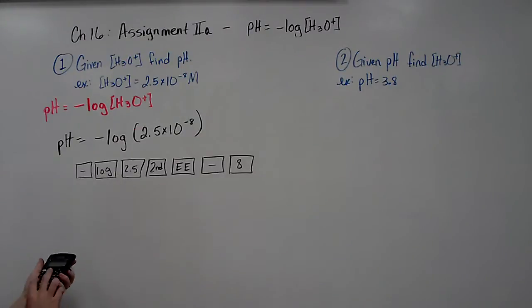So let me do that right now. Negative log, 2.5 E negative 8 equals, and you should get 7.6, and they give you a really long number.